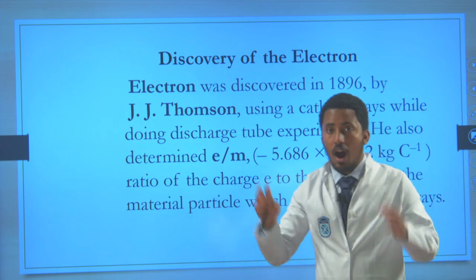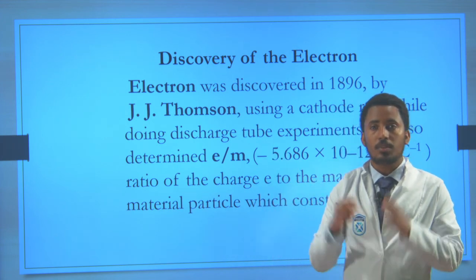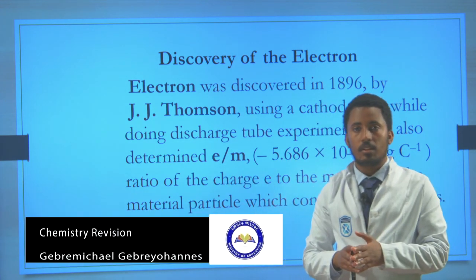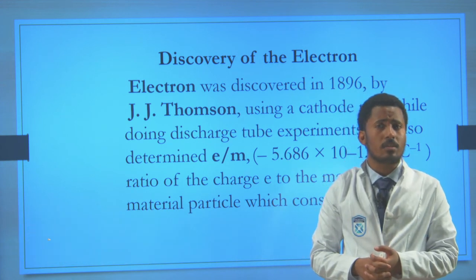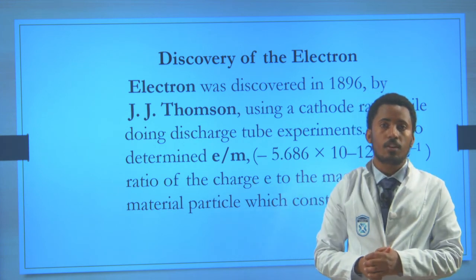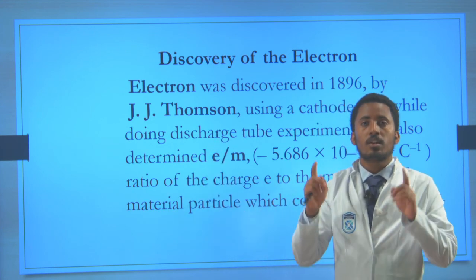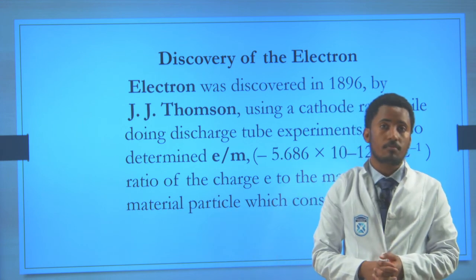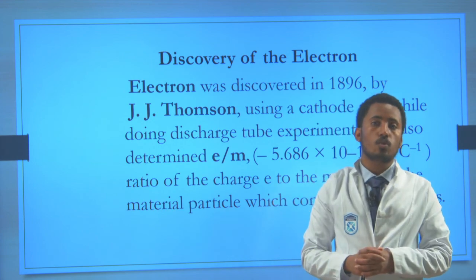After the theory states atoms can be divisible, scientists tried to find out how it's happening. They discovered there are subatomic particles. The first subatomic particle to be found was electron. Now we are going to watch a video how electron was founded.